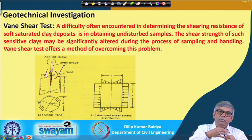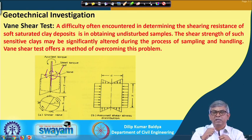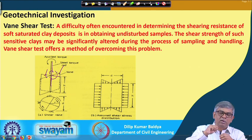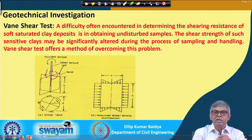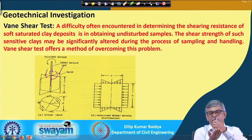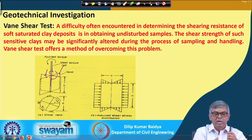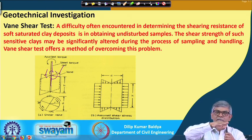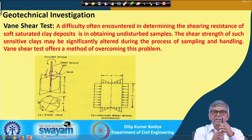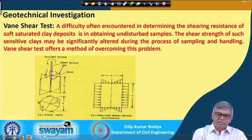Slowly you rotate the rod — by rotating, you are applying a torque. When you apply torque through the rod, the vane tries to rotate within the soil. When it rotates, there will be resistance at the bottom of the vane, at the top surface, and on the cylindrical surface. So there are three different places where resistance acts.